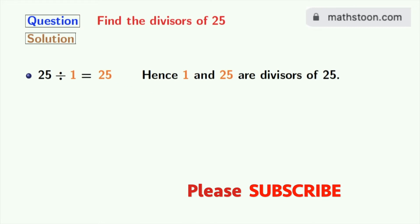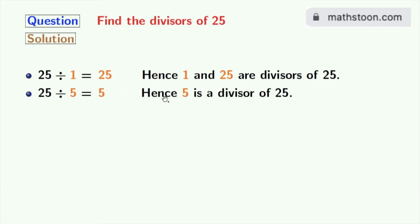Next numbers, 2, 3 and 4 do not divide 25. So, we will try for 5. 25 divided by 5 is equal to 5. So, 5 is a divisor of 25.